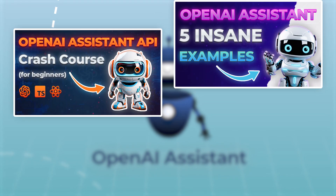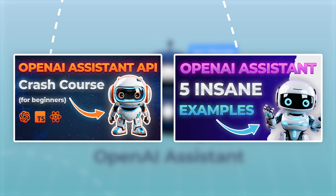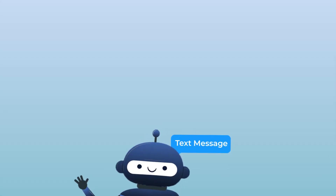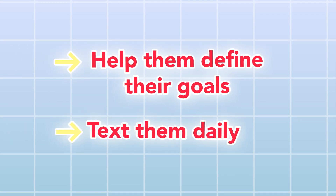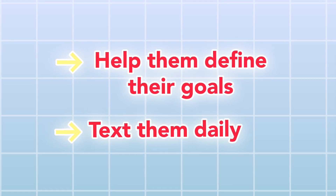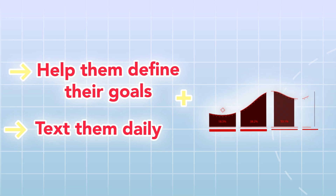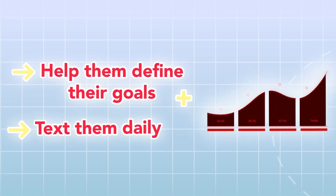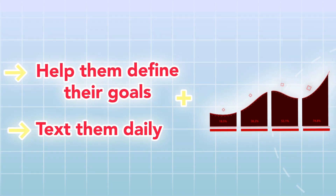For our app, what we're going to do is train an OpenAI assistant to become a nutritionist, a fitness coach, or therapist — or really whatever else we want them to be. This app will basically text our customers throughout the day to make sure that they're hitting their goals. I actually just released two videos where I teach you everything you need to know about working with assistants, so you'll definitely want to check those out if you're interested in bringing this idea to life. The key thing for this type of app is to help people define their goals and then text them daily to hold them accountable. You could also use the user's responses to help generate weekly charts to let them know how they did.